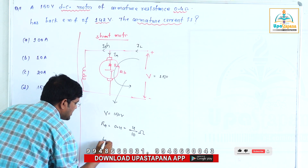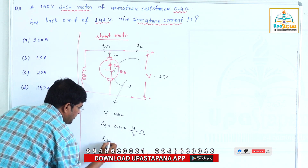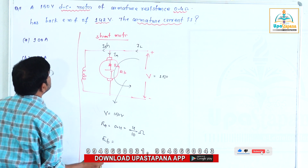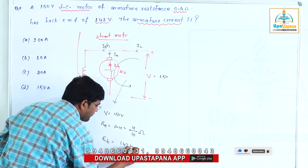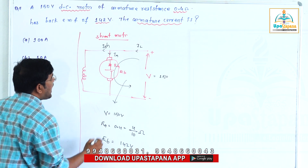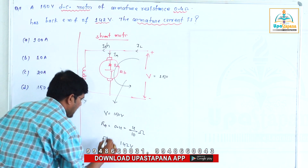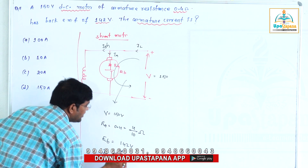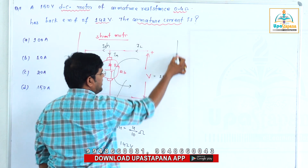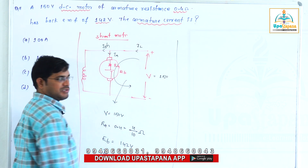The back EMF is 142 volts. This is the armature resistance. These are the given values — this is the data and this is the question to solve.